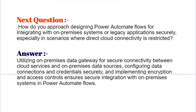Next question: How do you approach designing Power Automate flows for integrating with on-premises systems or legacy applications securely, especially in scenarios where direct cloud connectivity is restricted? Utilizing on-premises data gateway for secure connectivity between cloud services and on-premises data sources, configuring data connections and credentials securely, and implementing encryption and access controls ensures secure integration with on-premises systems in Power Automate flows.